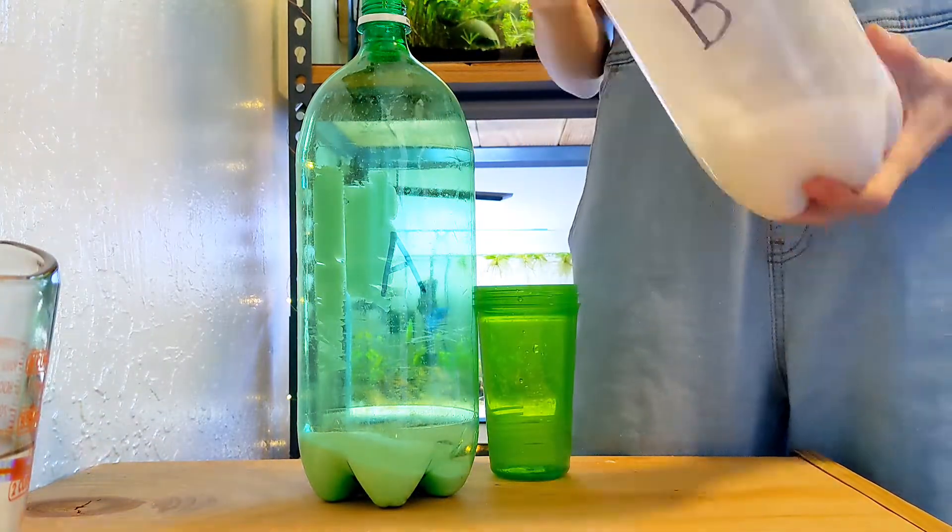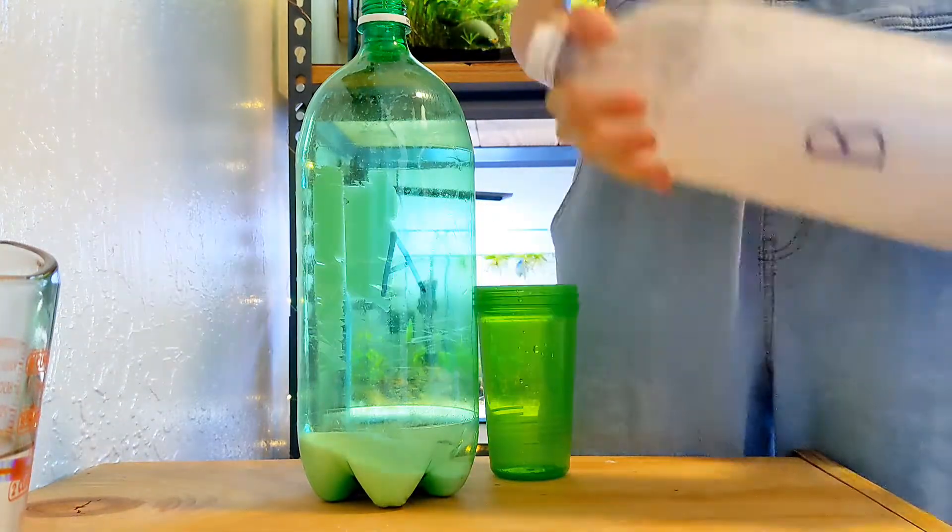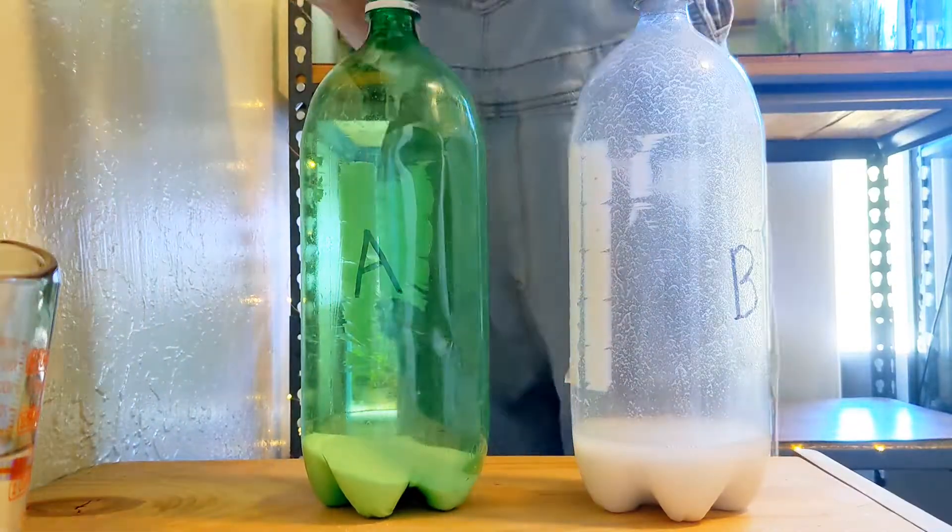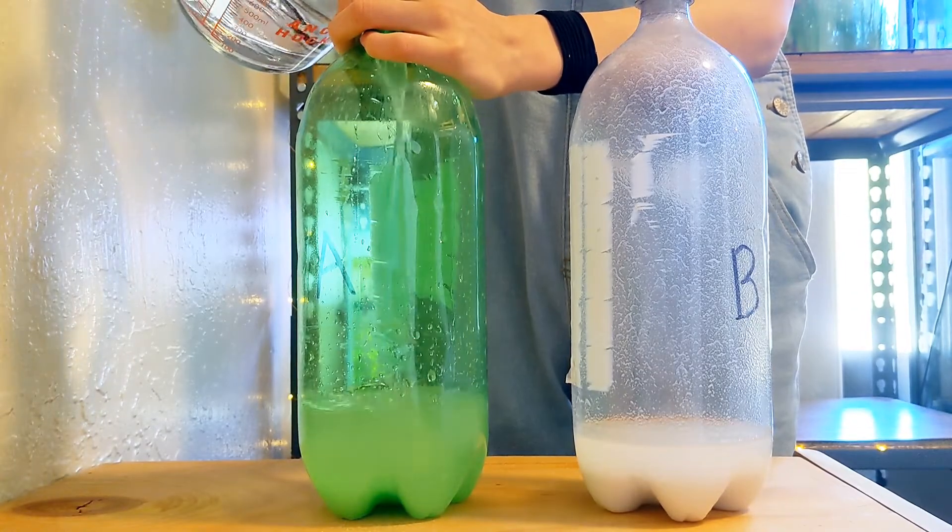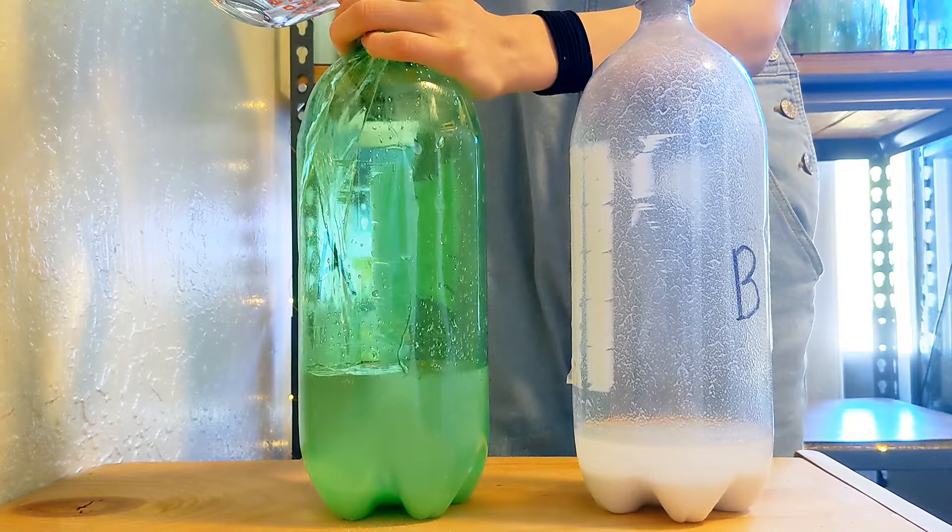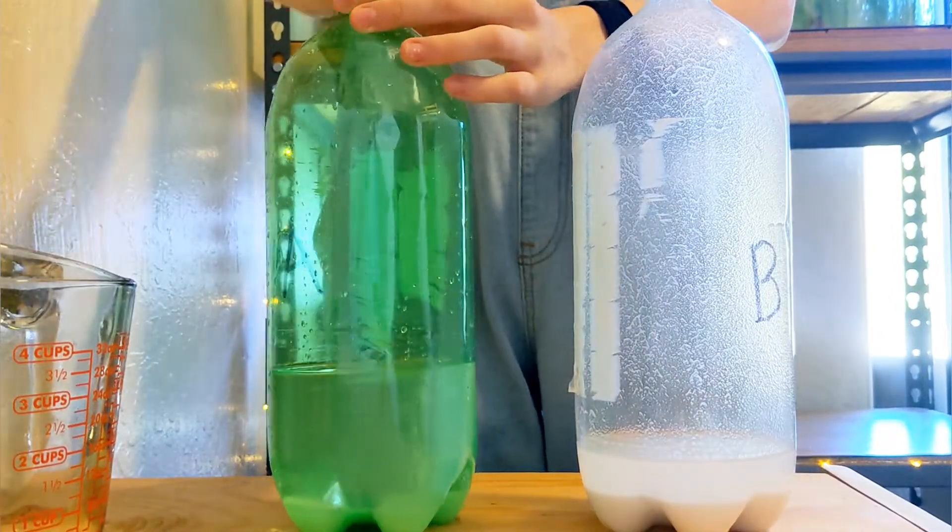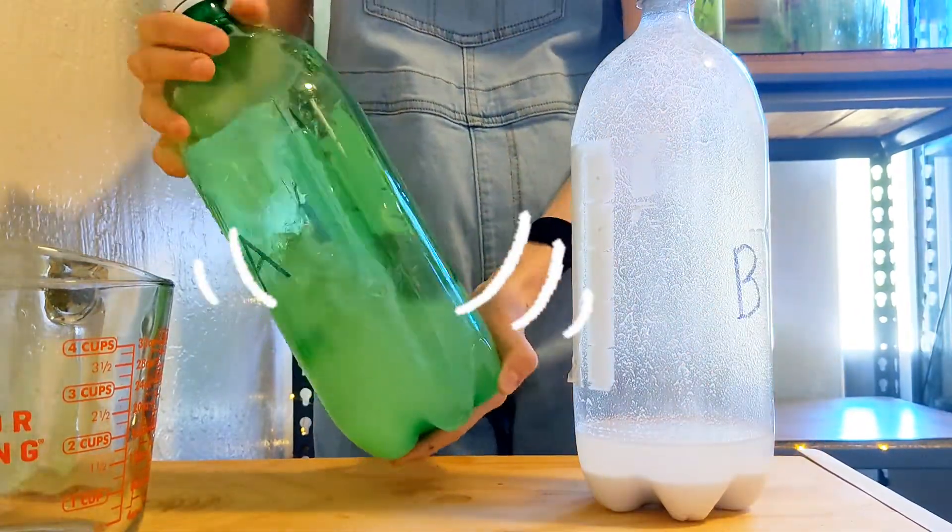After you've done that and shaked it really fast, you can move on to your A bottle. You're going to need 600 milliliters of water for your A bottle. Now, you don't quite have to mix your A bottle as thoroughly as the B bottle. In fact, you probably shouldn't even shake it. Just stir it around a bit until it's all dissolved.